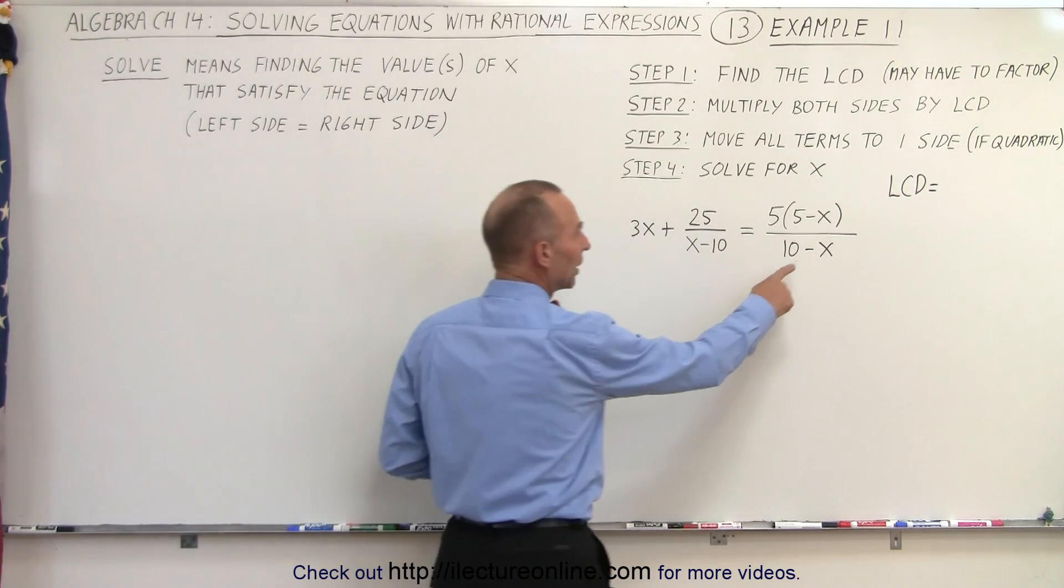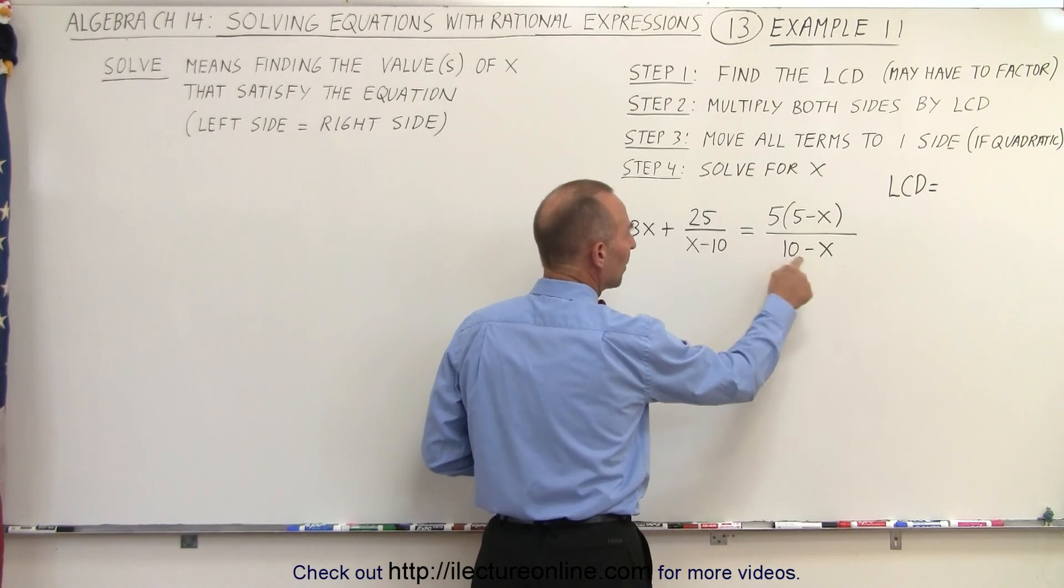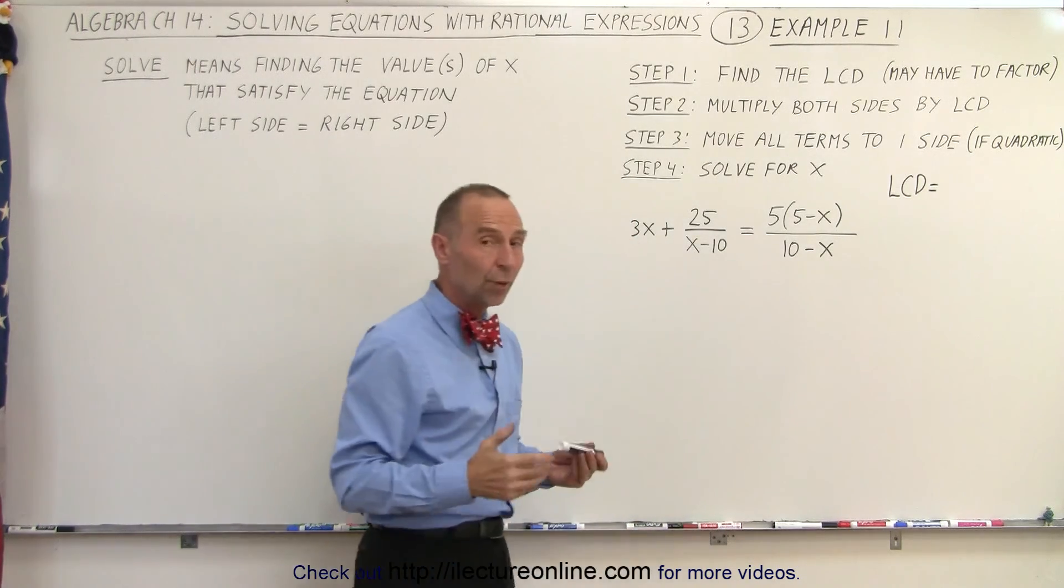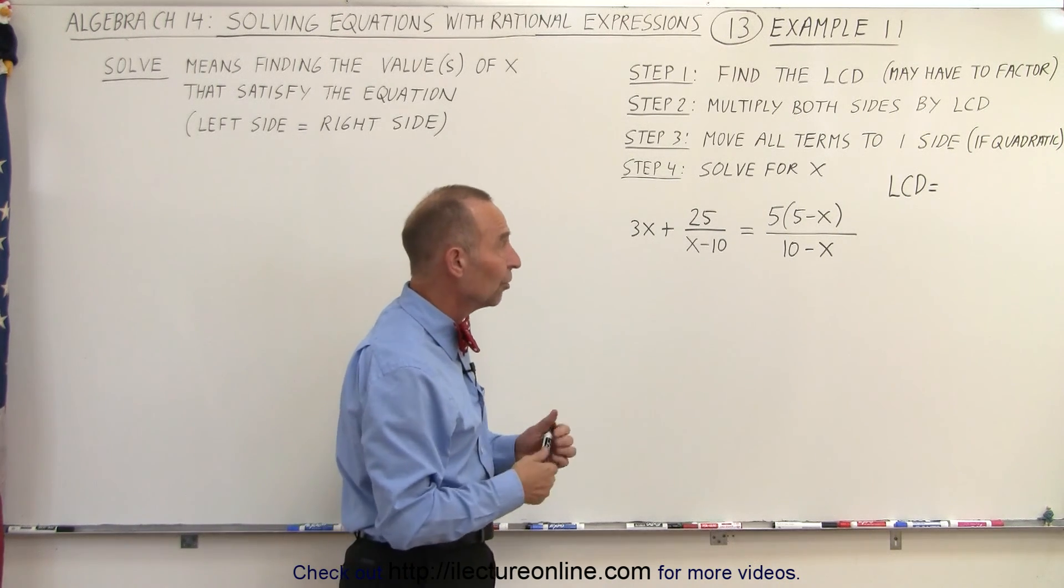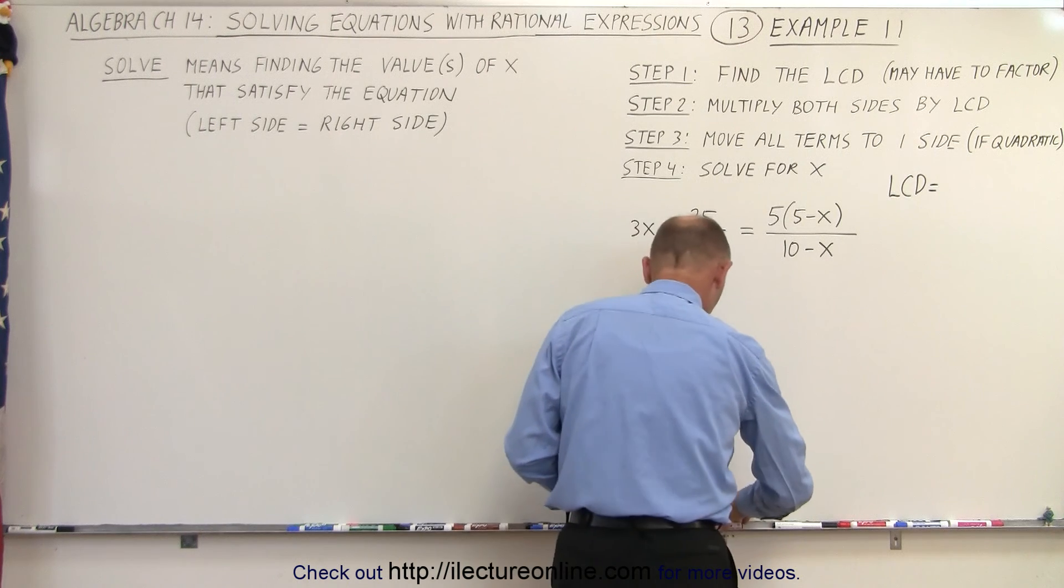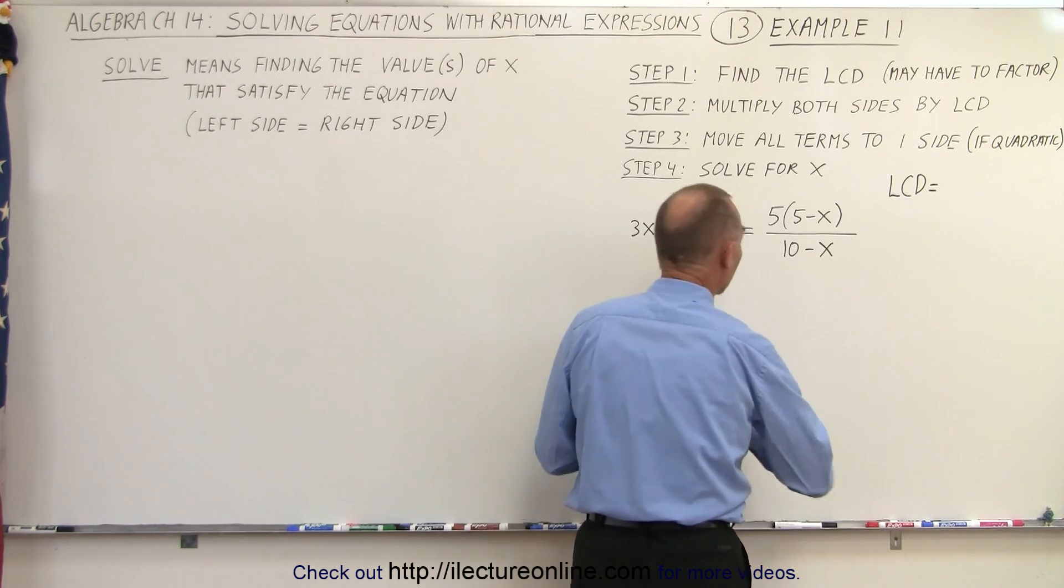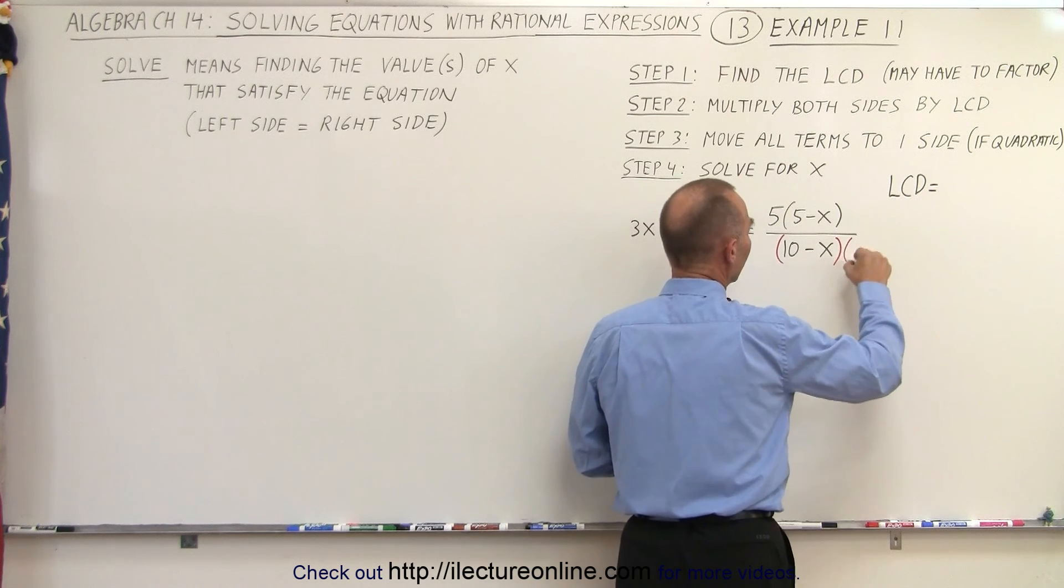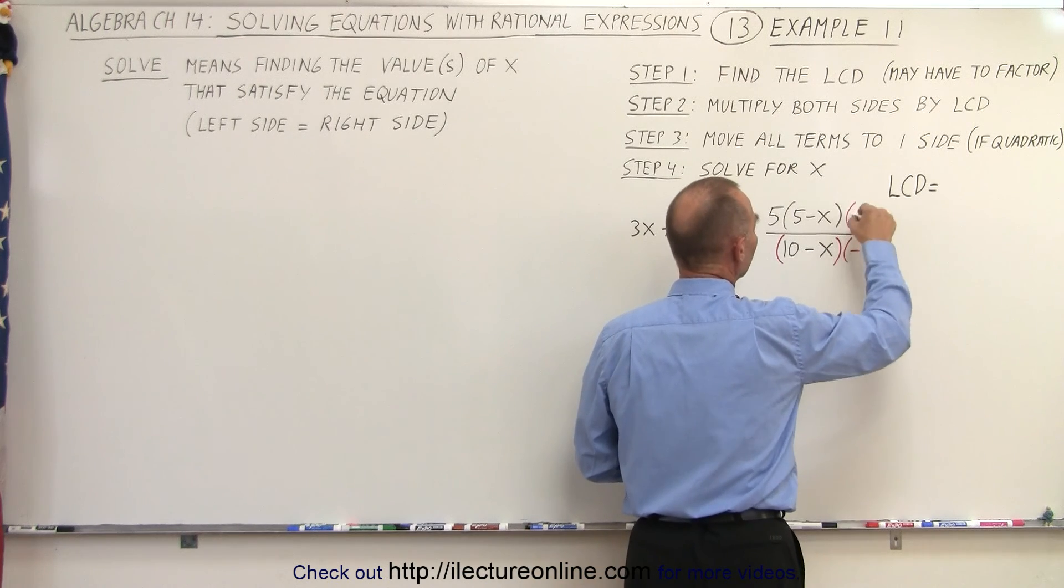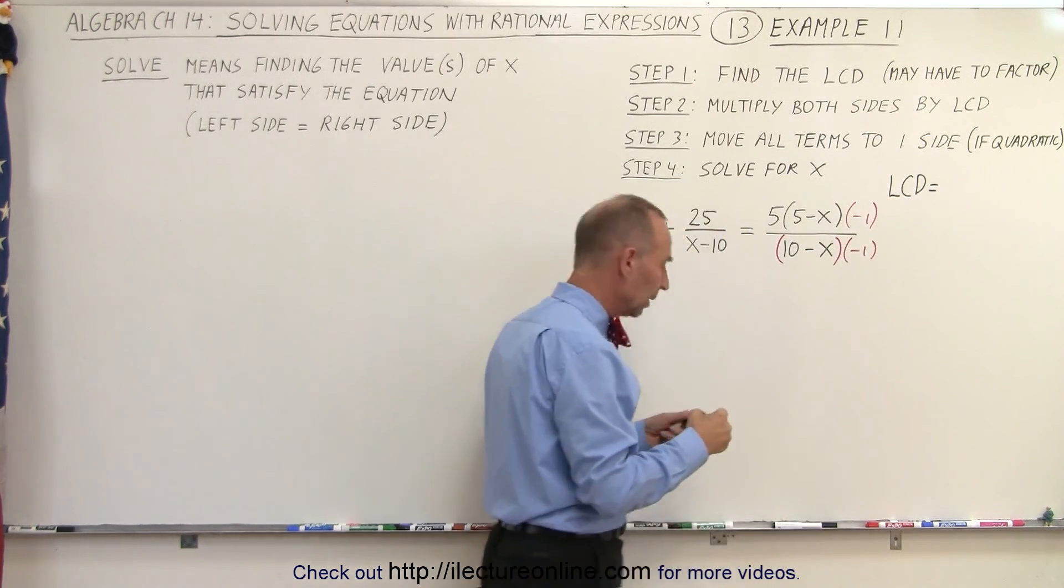We can make this denominator look exactly like this one by multiplying it by negative 1. But of course, if we multiply the denominator by negative 1, we must do the same to the numerator. So we're going to multiply this denominator times negative 1, and we have to multiply the numerator by negative 1 as well.